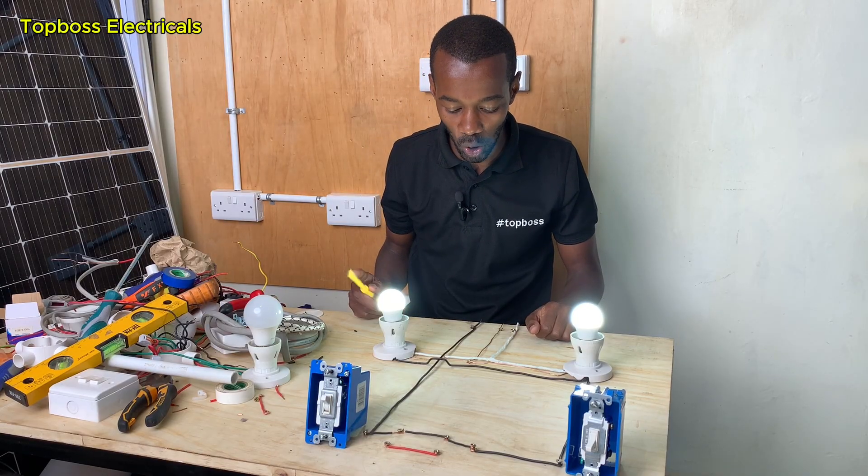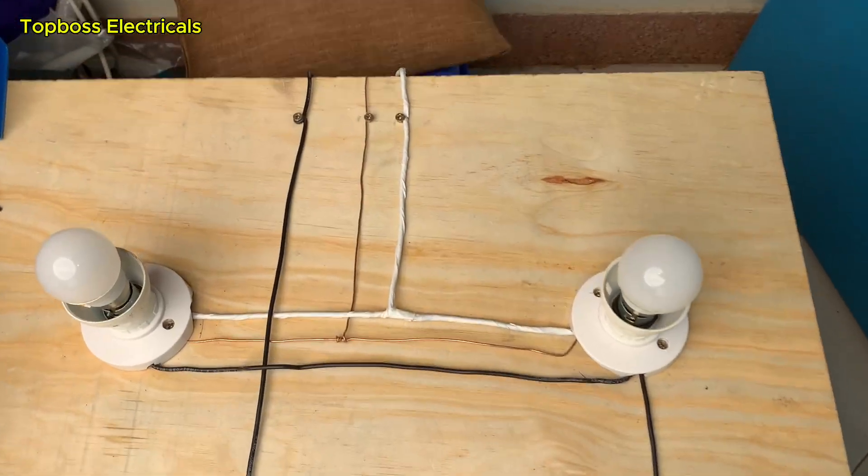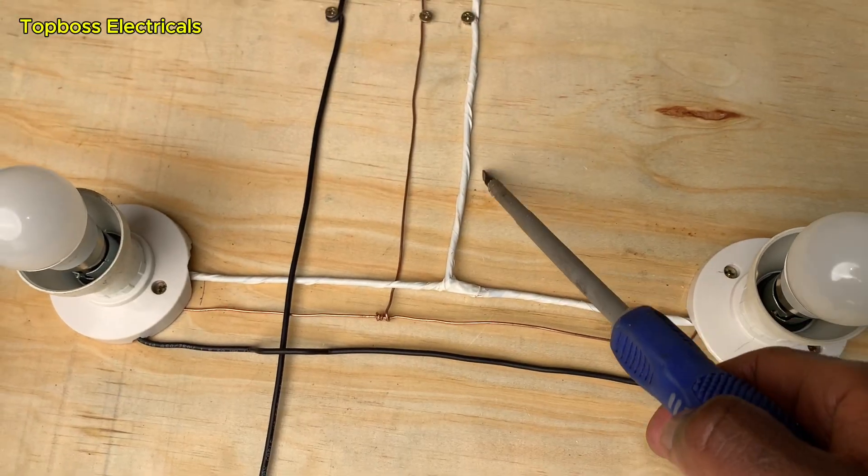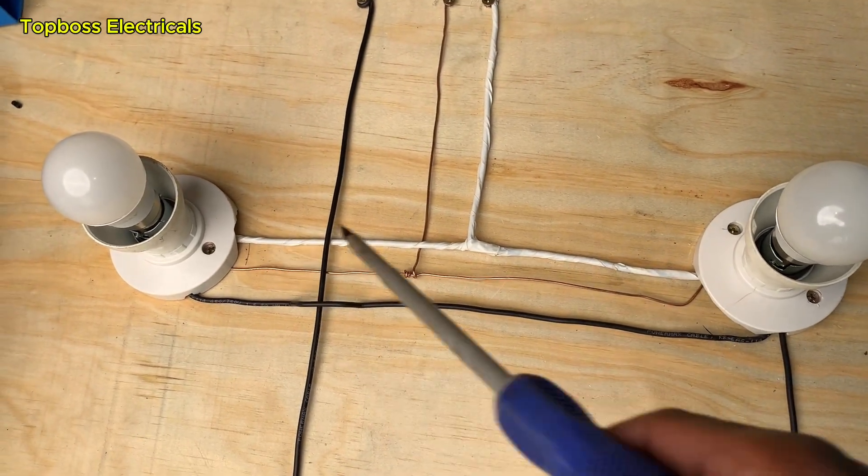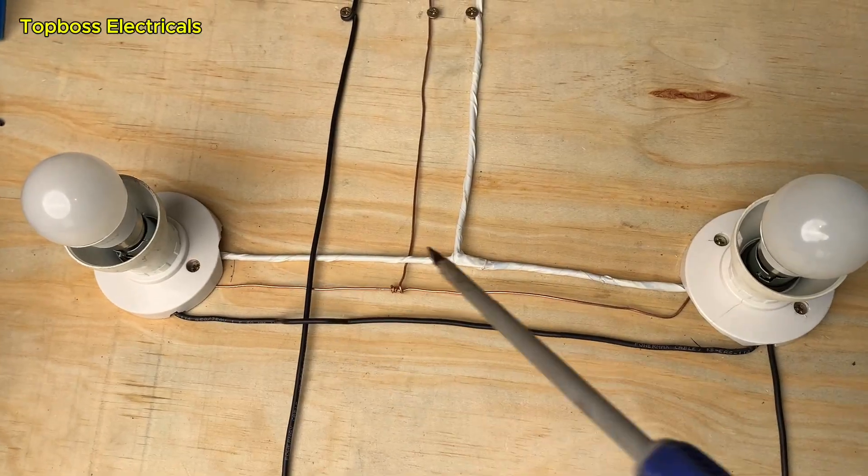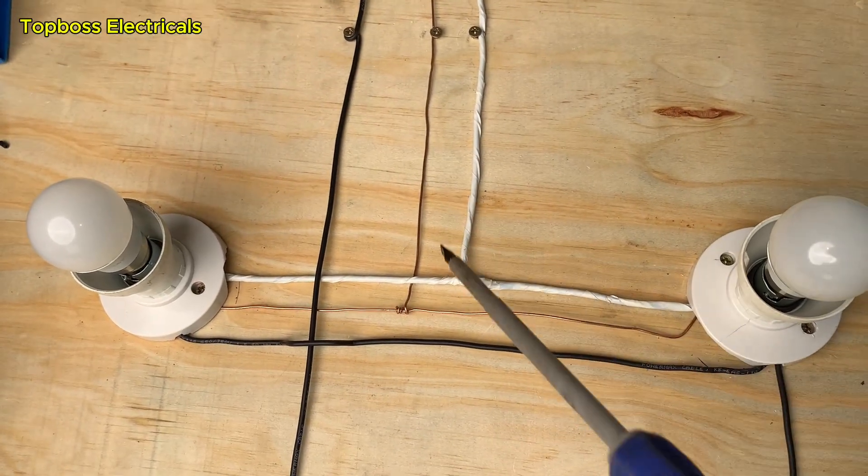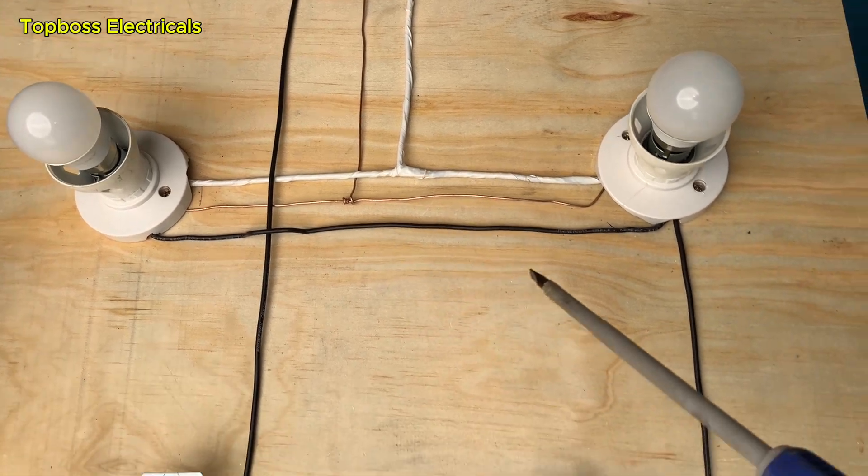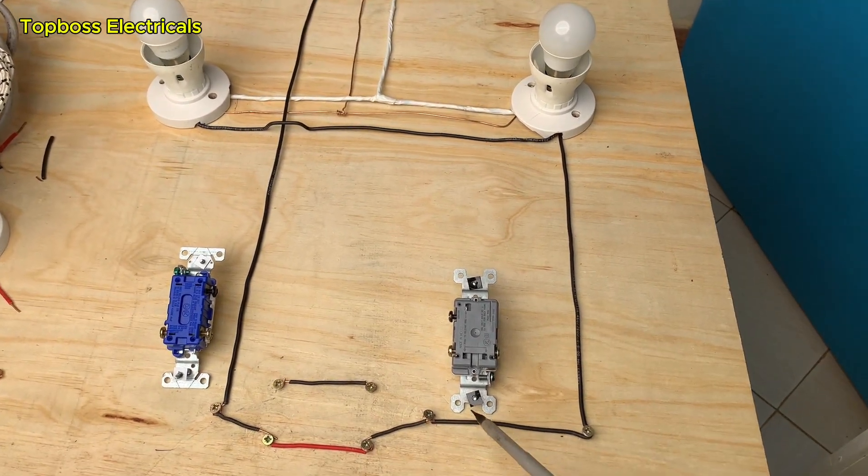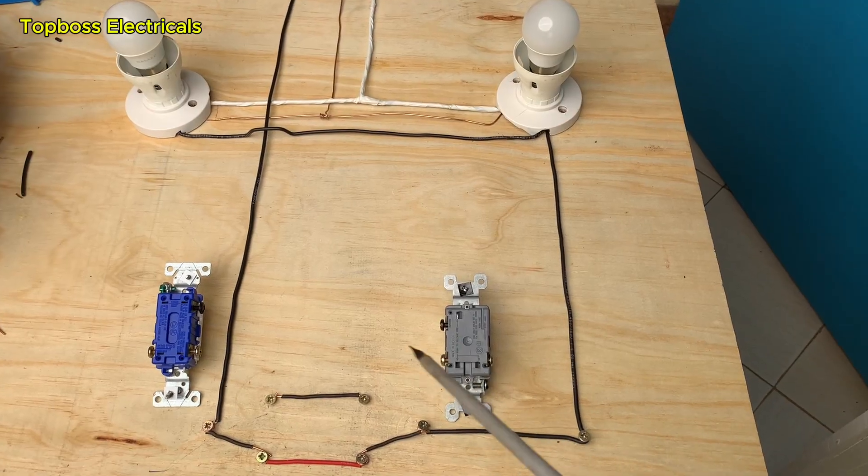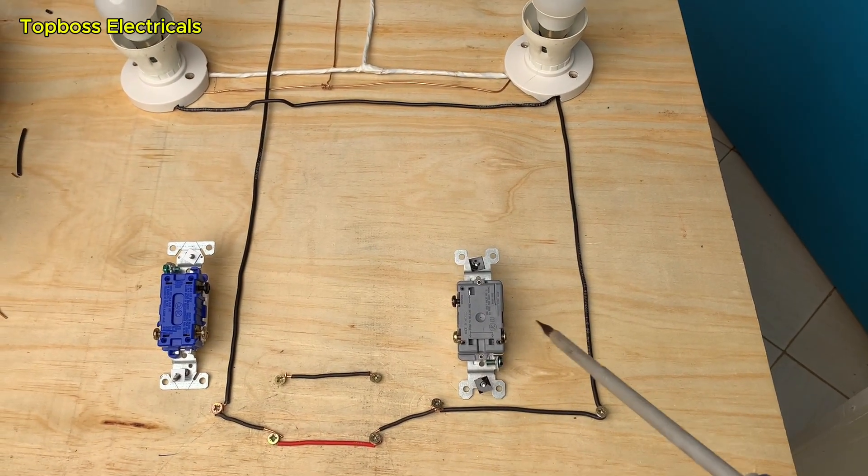From the feed, we have the incoming neutral, the white, connecting these two bulbs together or the lighting points. Then we have our ground wire. Under the wiring circumstances, you will find that all of those have to come to the switch so that each switch is connected with a ground wire.